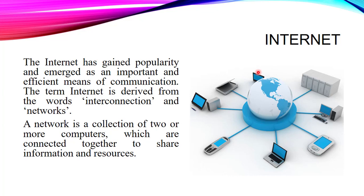The term internet is derived from the words interconnection and network. This term internet is a combination of the words interconnection and network. It simply means it is the connection of multiple networks which are connected together to share resources around the world. As you can see in this picture, we have a globe and there are so many resources which are connected, meaning all the resources around the world are connected through the internet.